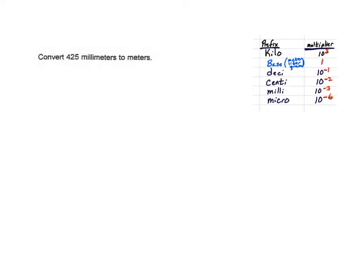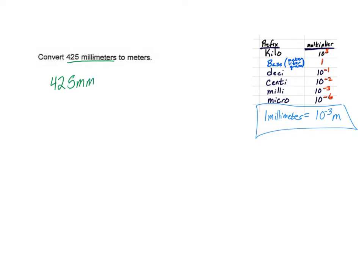I'm going to focus on just D here. First I'm going to write our conversion using milli and meters. Looking at our chart on the right, we can see that milli means 10 to the negative 3rd, so we can write: 1 millimeter equals 10 to the minus 3 meters. We can turn that into a conversion factor as needed. In our question, it tells us that we have 425 millimeters, so we'll start with that and put the 425 mm on the top of a fraction — 425 mm divided by 1.